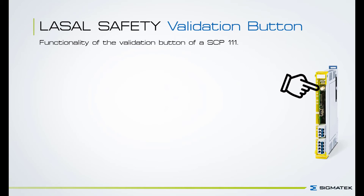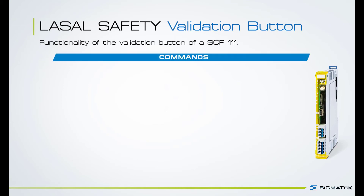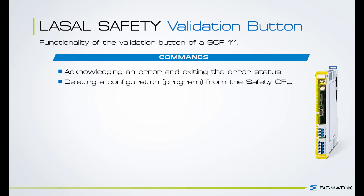With the validation button you have several commands. The first command is acknowledging an error and exiting the error status. The second one is deleting a configuration, for example a program, from the safety CPU. And the third one is validating the safety system configuration.